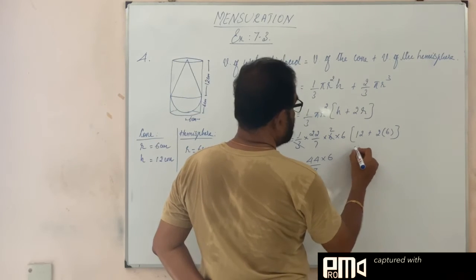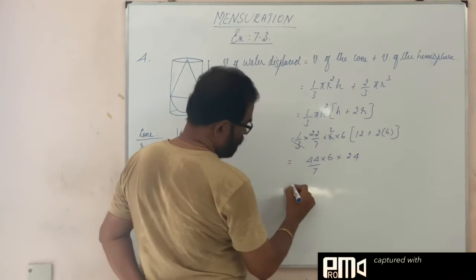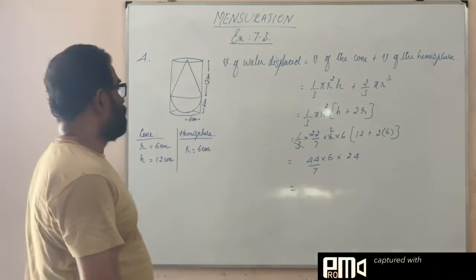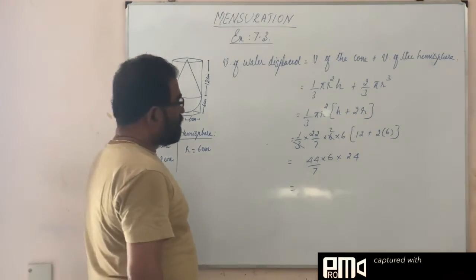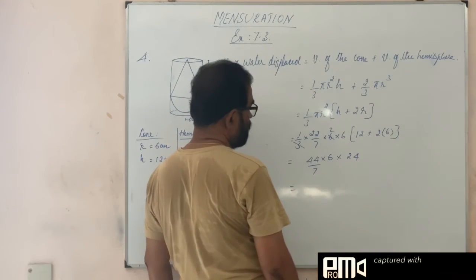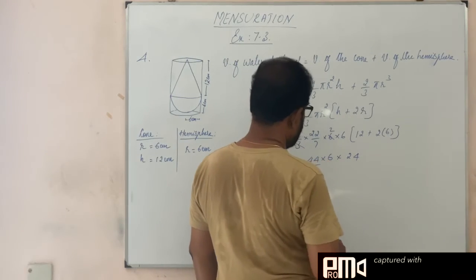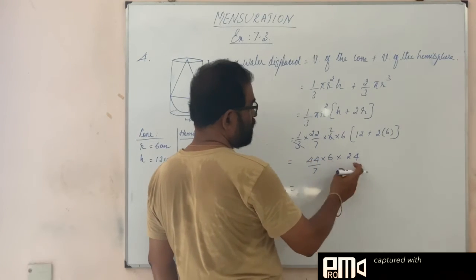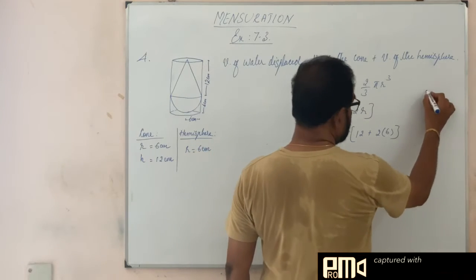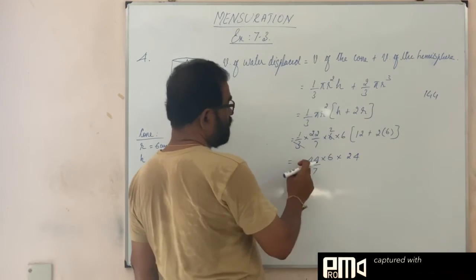Then this is 12 plus 12, 24. I don't think we can cancel something with a 7 so now we have to multiply everything. 44 × 6 is, or we can multiply the 6 and 24, 144. 6 and 24 is 144, then this 44.